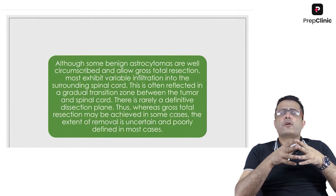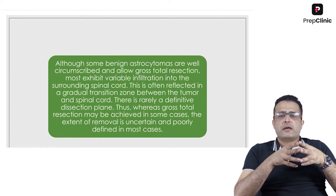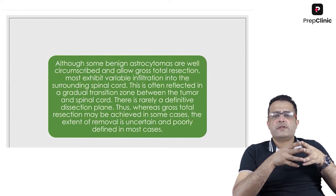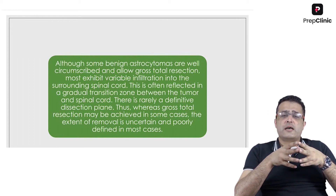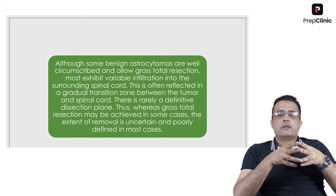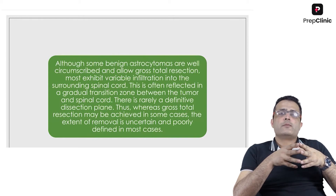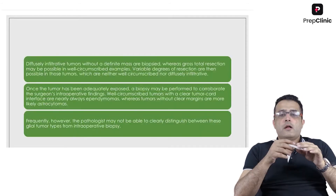That may also be true for a few astrocytomas, but most astrocytomas exhibit variable infiltration into the surrounding spinal cord, often reflected in a gradual transition zone between the tumor and the spinal cord. A definitive dissection plane between an astrocytoma and the normal spinal cord is rarely found, making the extent of tumor removal uncertain and poorly defined.